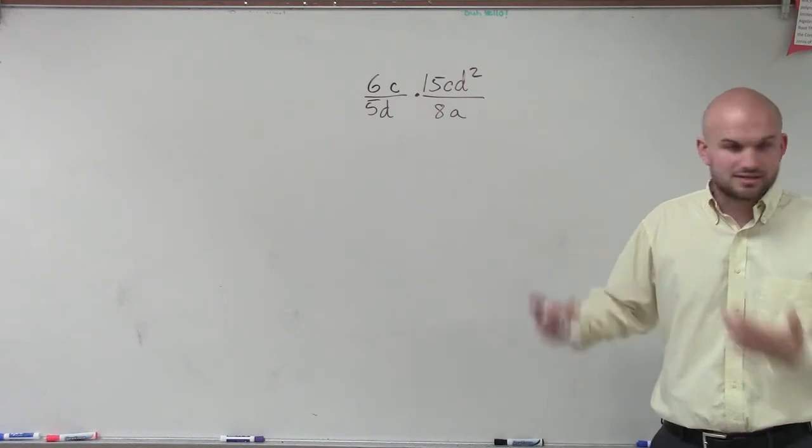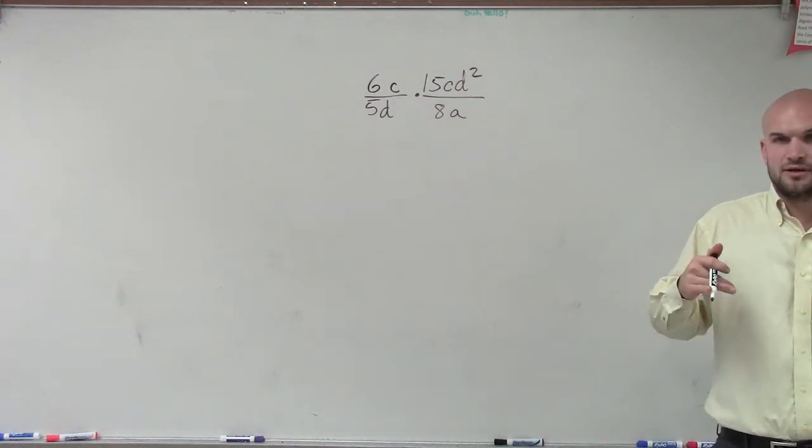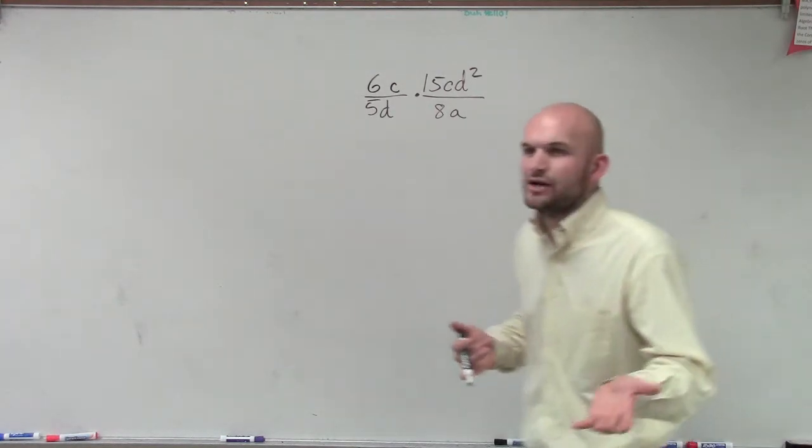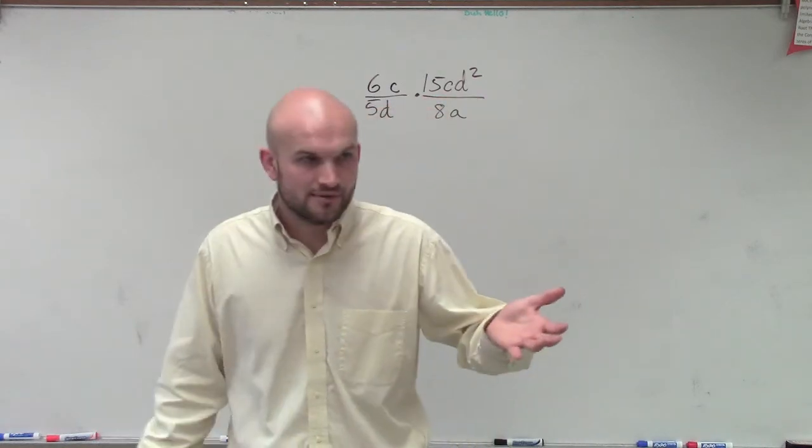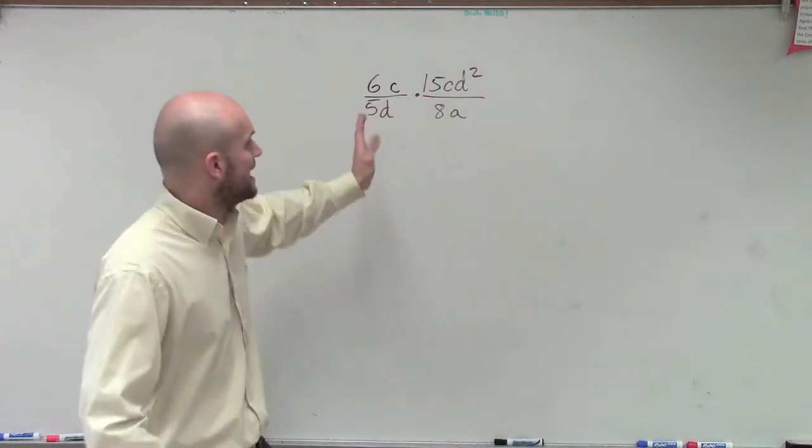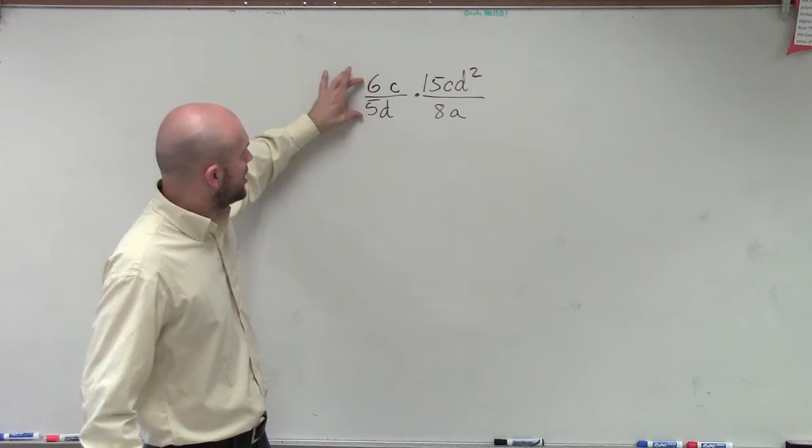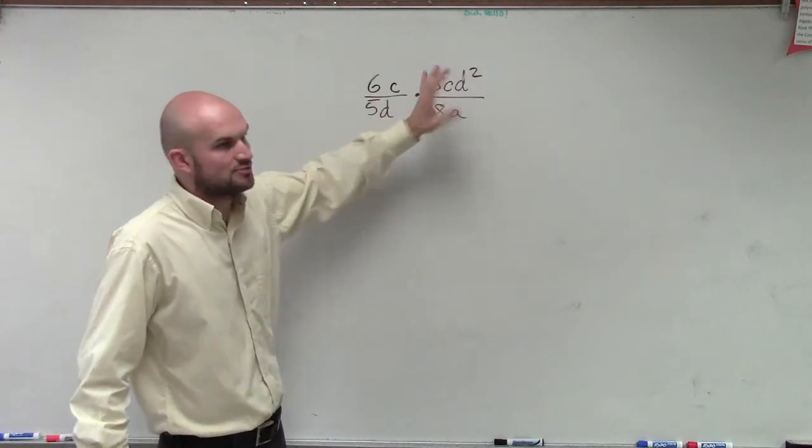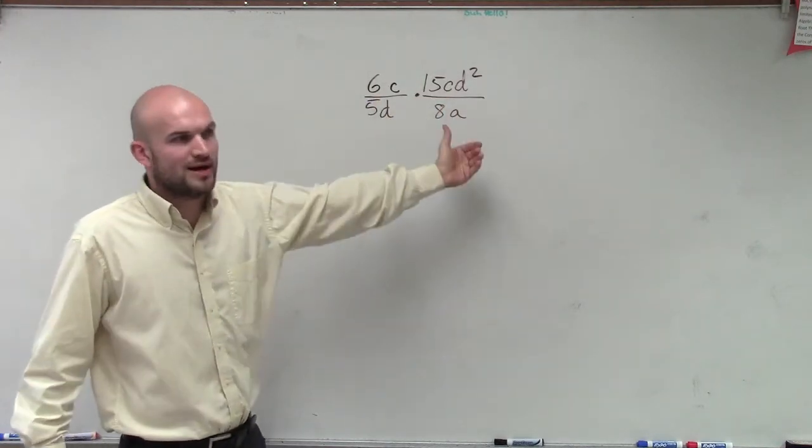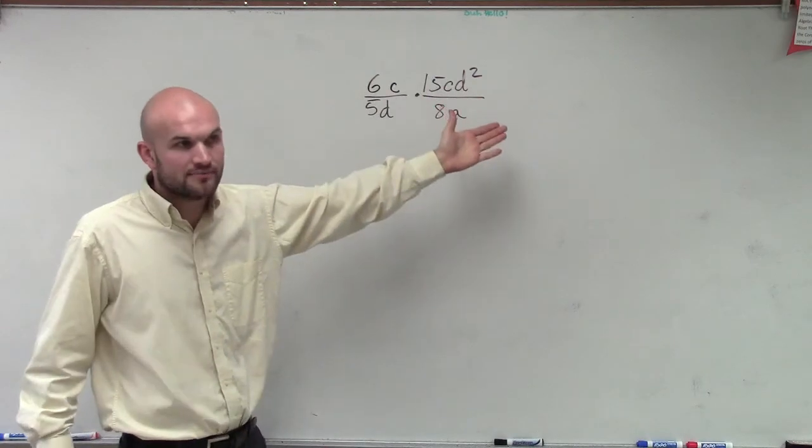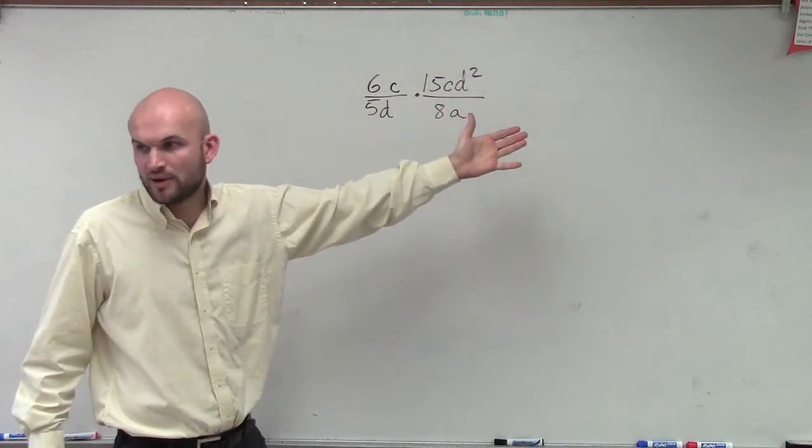So when you have a problem like this, let's just multiply them together. However, does it matter if I have 3 times 4 or 4 times 3? No. So can I rewrite this? It doesn't matter what order I'm multiplying all this, because all I'm doing is multiplying. So it doesn't matter which order I multiply it.